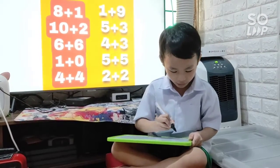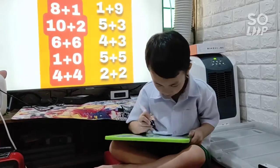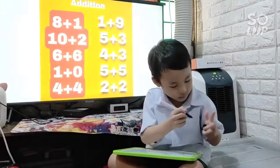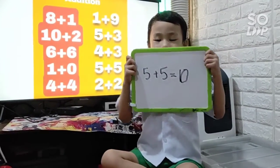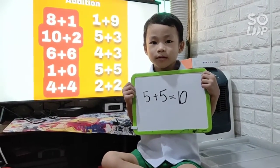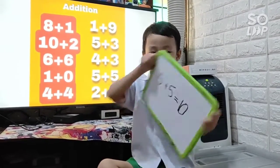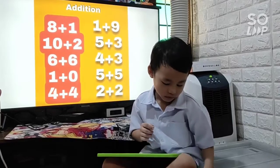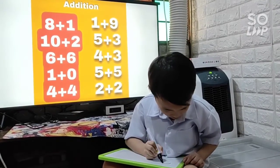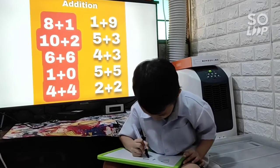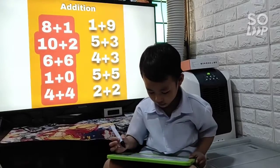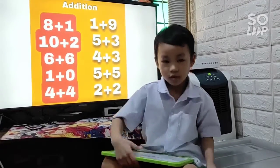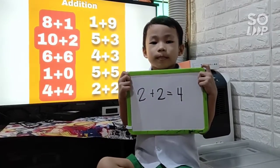5 plus 5 equals 10. Last, 2 plus 2 equals 4.